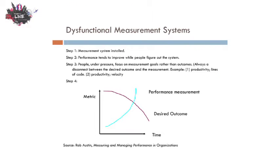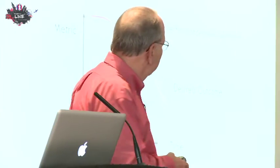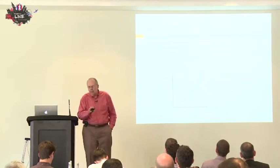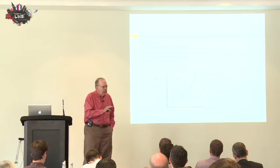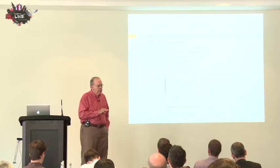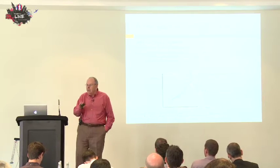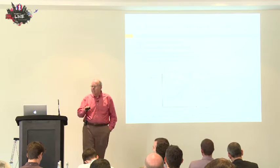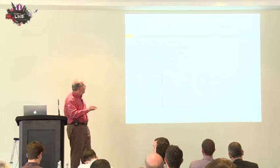One of the better books on measurement was written by Rob Austin, who used to be a Harvard Business School professor and is now the dean of business at a college in New England. The theme of the book is that all measurement is dysfunctional, and it causes exactly the opposite behavior of what you intended.